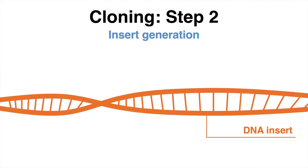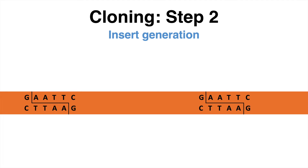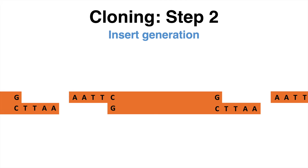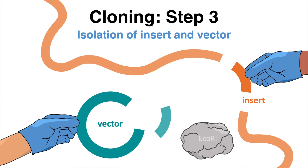Once the insert is generated, it needs to be prepared before being pasted into the backbone. A classical way of doing so is with restriction digestion. Again, restriction enzymes can be used to generate the same overhangs as those of the backbone. Now that insert and vector are cut, unfortunately one can't just throw the digestion mixtures together.